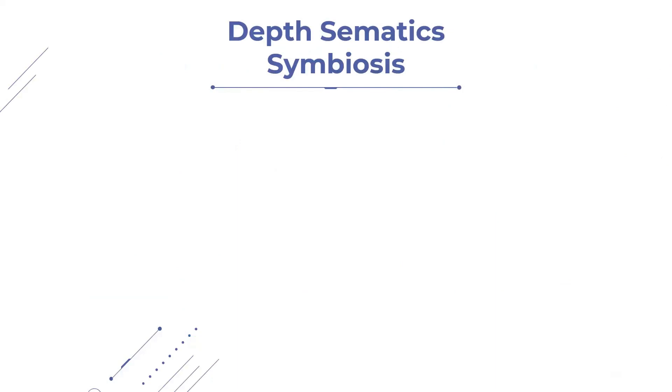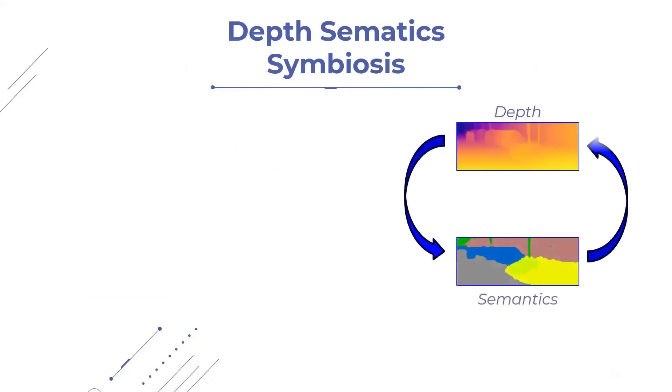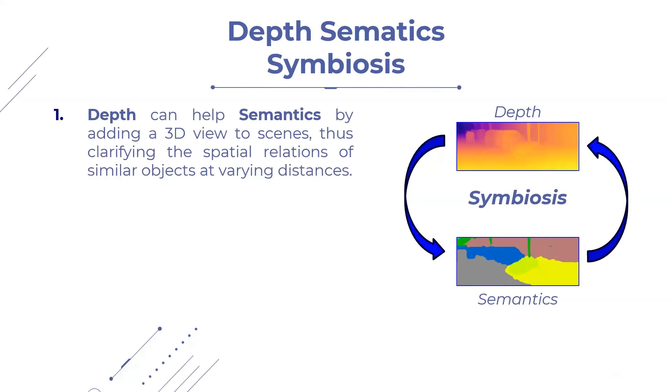Moreover, due to the semantic relationship between depth and semantics, both tasks can enhance each other by sharing information. For example, depth can help semantics by adding 3D view to scenes, thus clarifying the spatial relations of similar objects at varying distances.